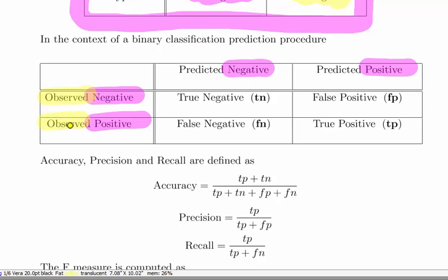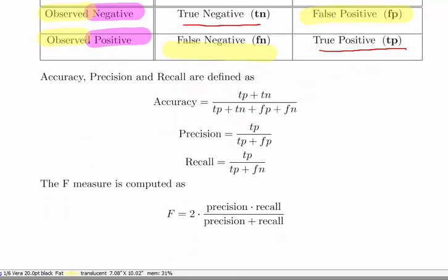We observe them to be positive or negative, and then our model will predict an outcome that is either positive or negative. If we correctly predict something as negative, that's a true negative. If we correctly predict something as positive, it's a true positive. But if we fail to make correct decisions, there's two possible types: a false positive and a false negative.